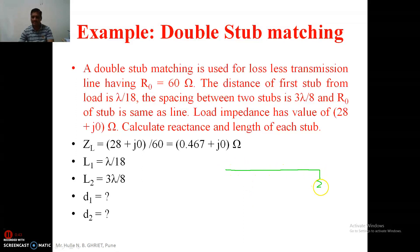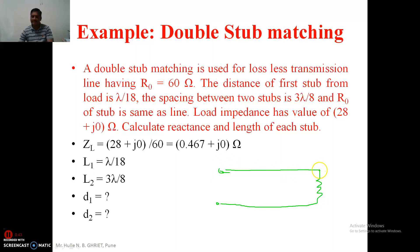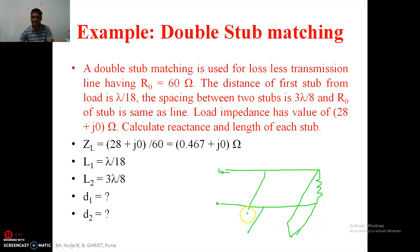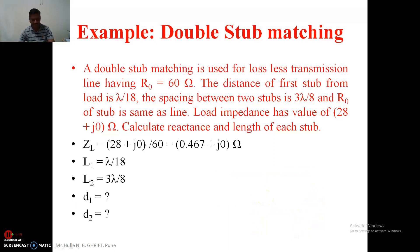Here we have a transmission line terminated by some load ZR. In this case the normalized value is 0.467. Previously we were locating the first stub at the load itself and the second stub at some distance, with the separation between the two stubs being maybe lambda by 4, lambda by 8, or 3 lambda by 4 and so on.